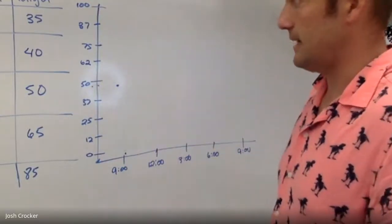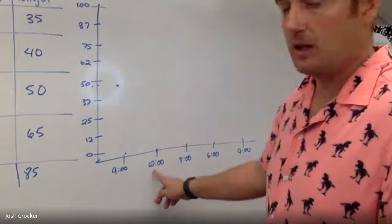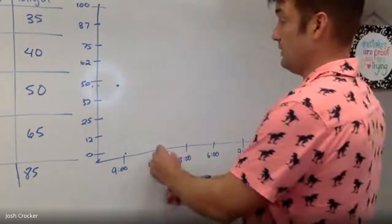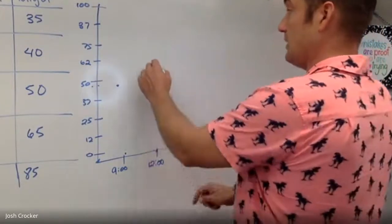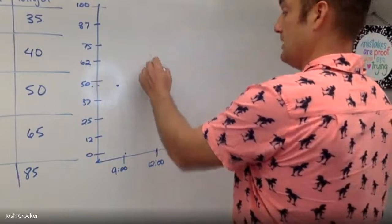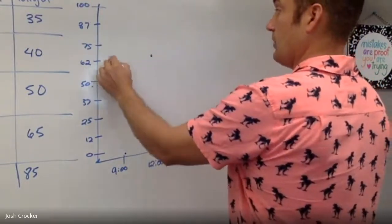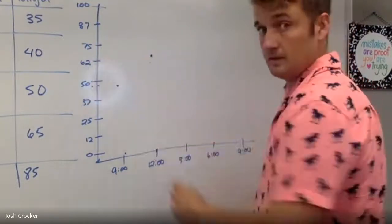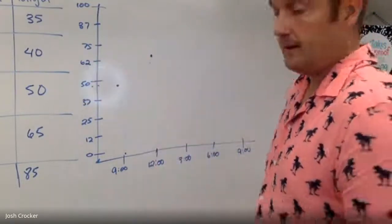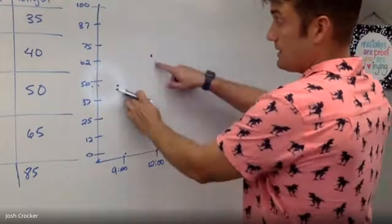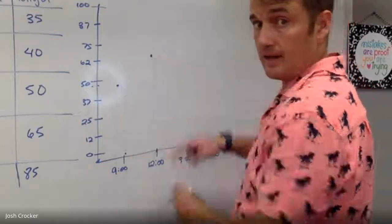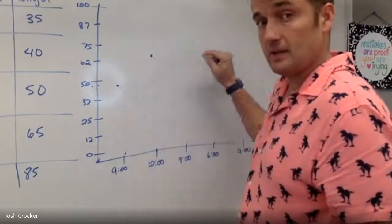The next data point I had was 12 o'clock, 63. Well I don't have a 63 on my chart but I have a 62. So I go straight up from 12 and I line it up with where I think 63 would be. And now I have two dots and I can start to connect those and make a line.